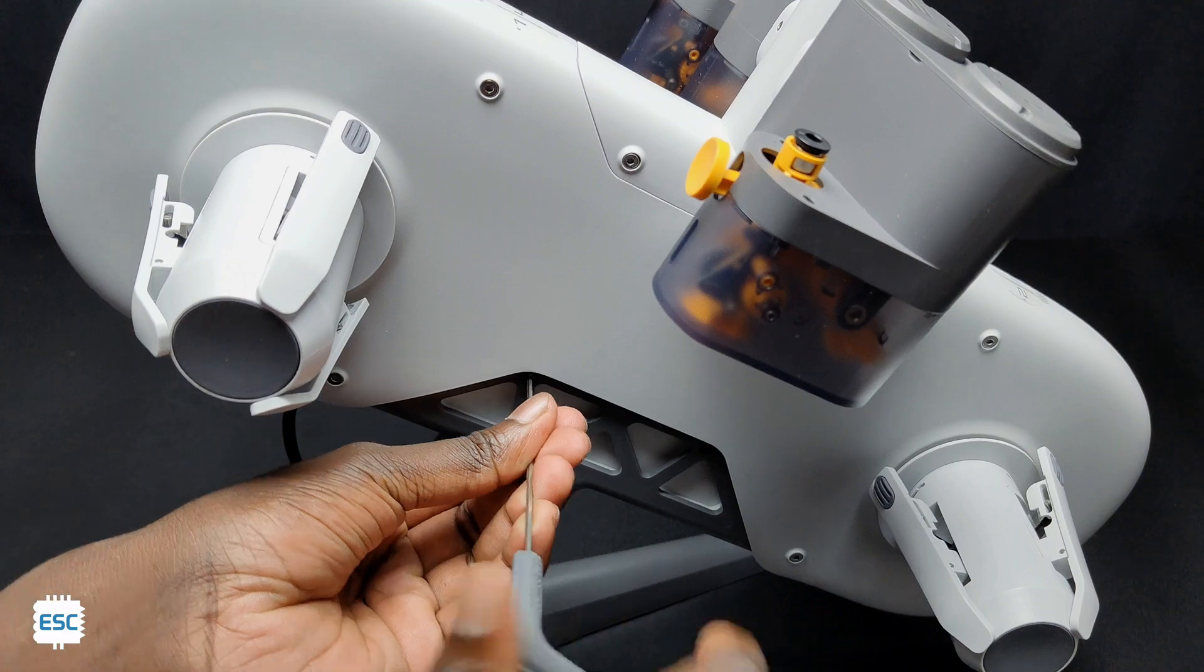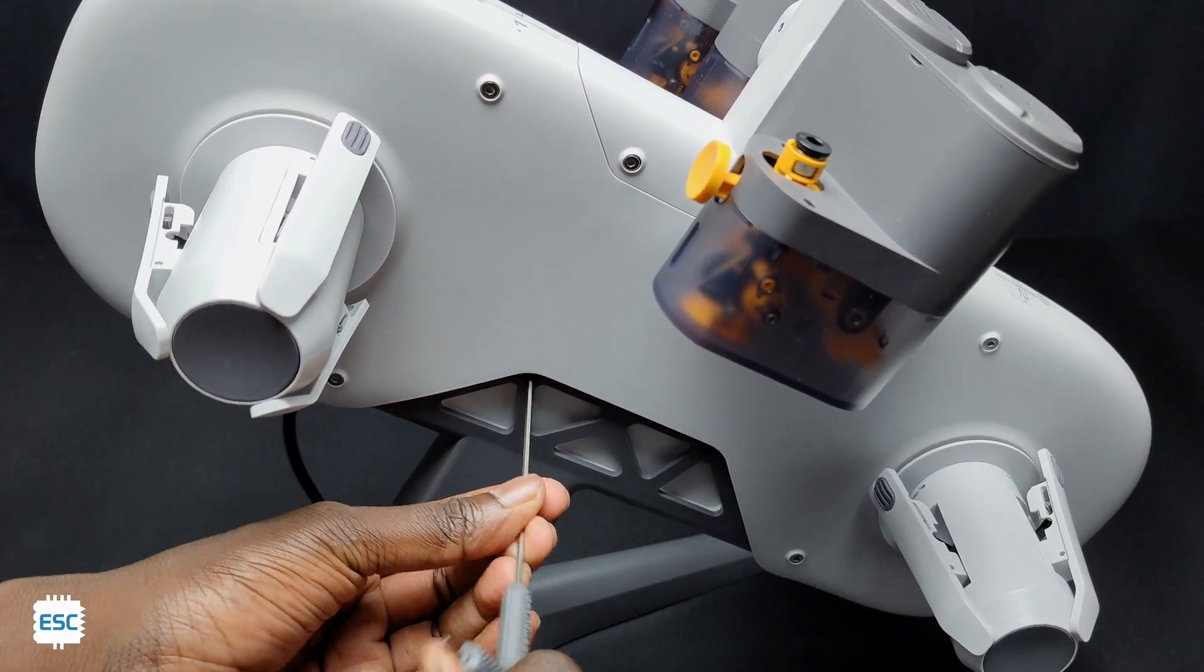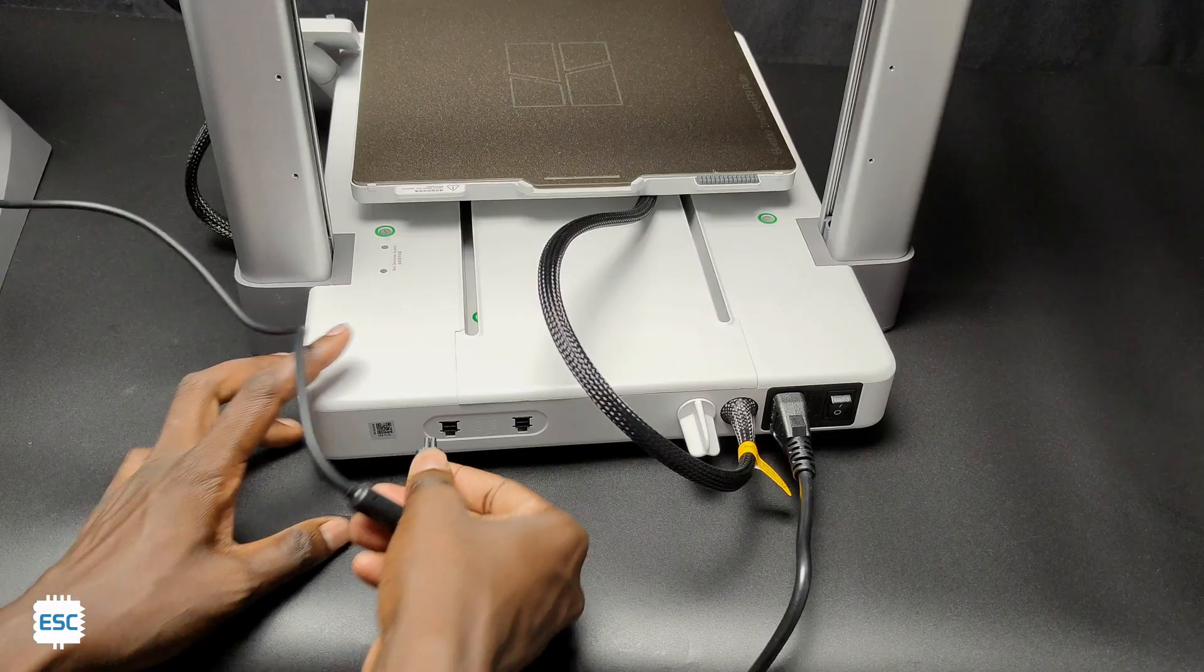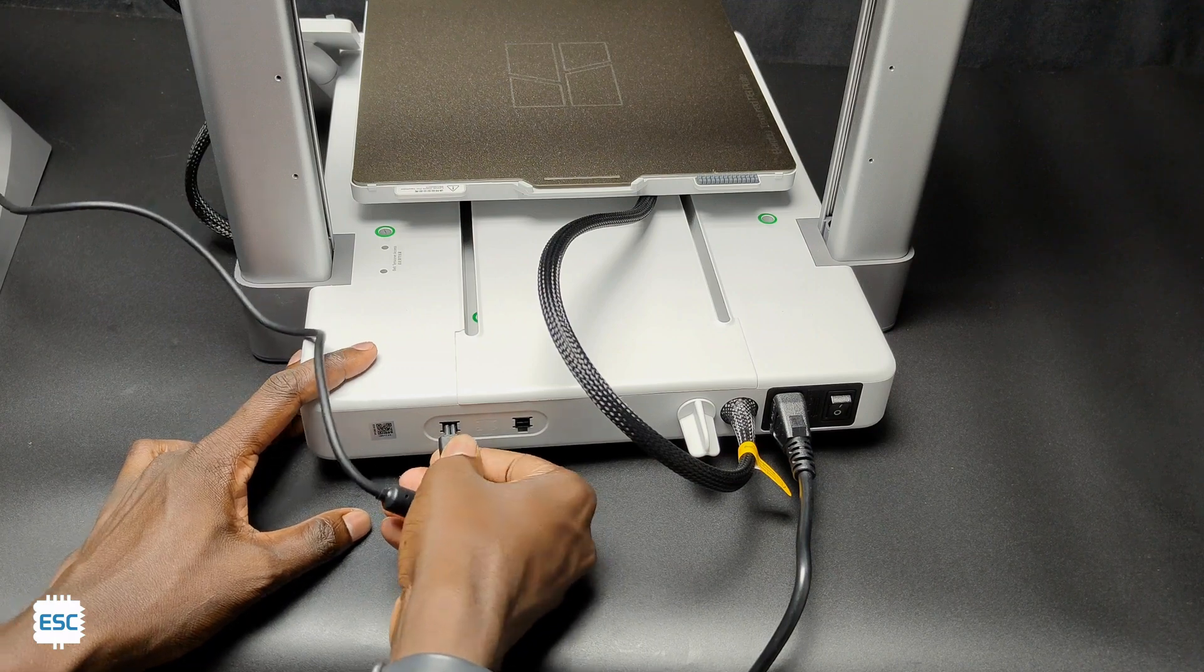The AMS helps to print multi-color. This AMS can be used to change four filaments at a time. After assembling the AMS, we can connect the AMS to the printer.